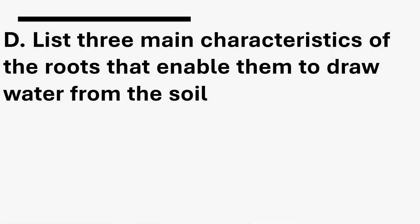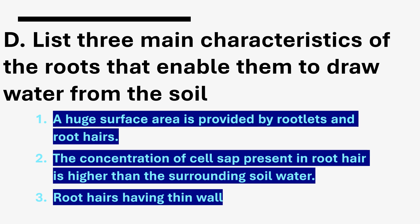List three main characteristics of the roots that enable them to draw water from the soil. First: a huge surface area provided by rootlets and root hairs. Second: the concentration of the cell sap in the roots is higher than the surrounding water. Third: root hairs have thin walls. These are the three main characteristics of roots for drawing water from the soil.